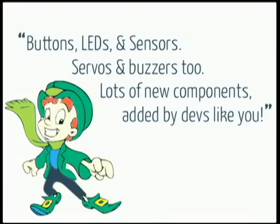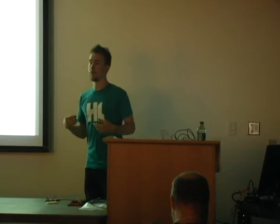I put together this rhyme that reminds me of the Lucky Charms rhyme: buttons, LEDs and sensors, servos, buzzers too — lots of new components added by devs like you. It's really simple to add this stuff, it's all open source. I only use a pretty small set of components because I'm teaching workshops for people who've never used Arduino before. When things become more advanced I'm not always implementing those — so I need developers out there to start adding things. For example, someone in the community contributed a servo class, which is really awesome. That's my call to action: if you want to help, it's super simple to add components. I'm seriously accepting pull requests.